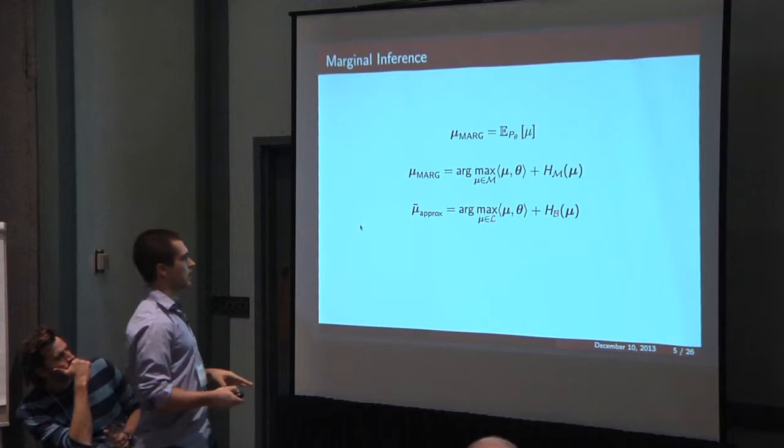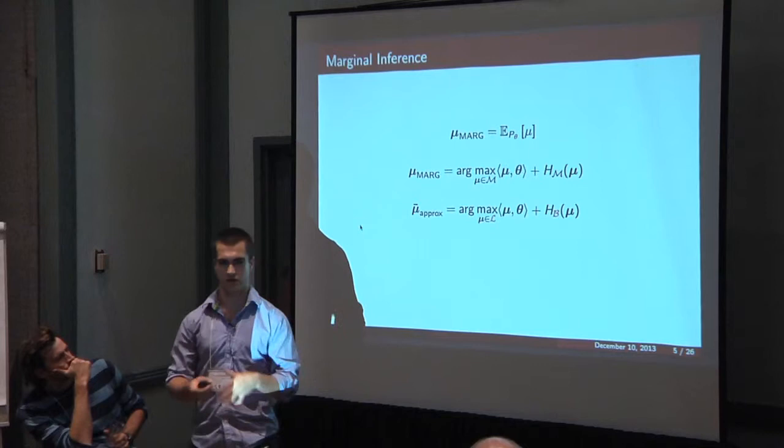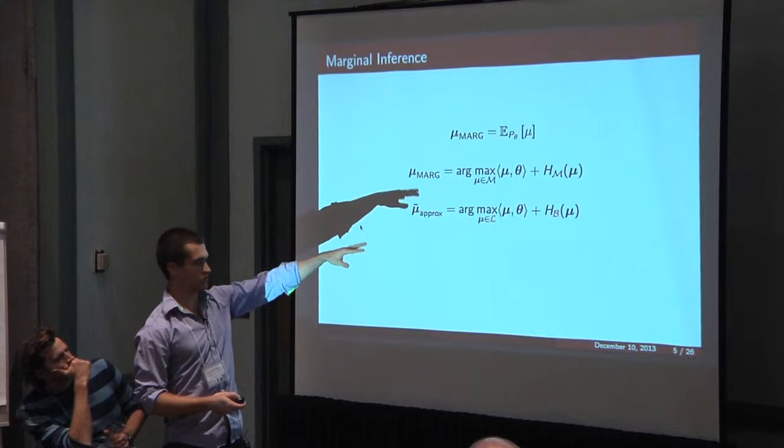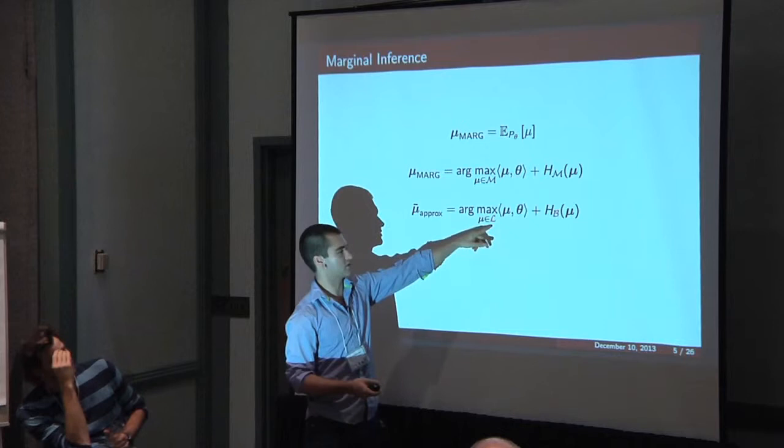There are two standard relaxations of this. One is that you can sort of convexify the entropy. The entropy is convex but you're defining it over this mu vector which is kind of strange, so it's not actually convex in this setting. So you make some sort of convex approximation.